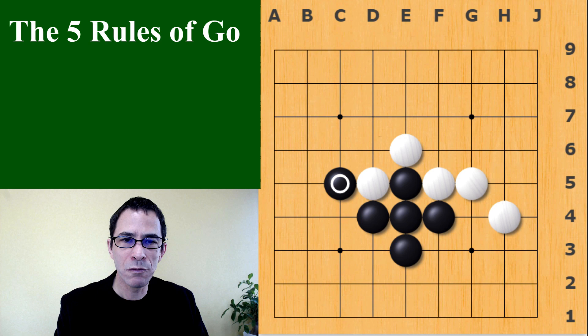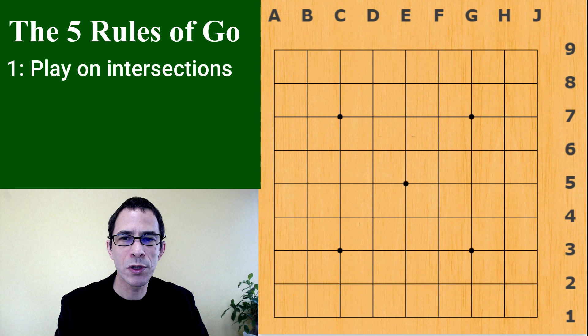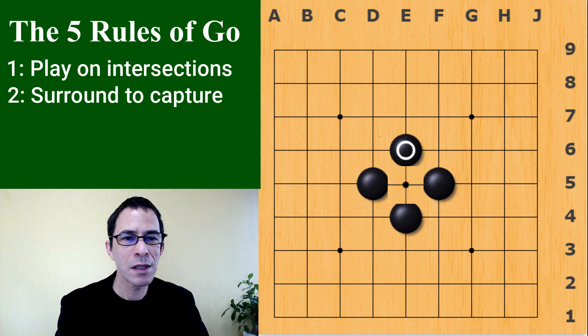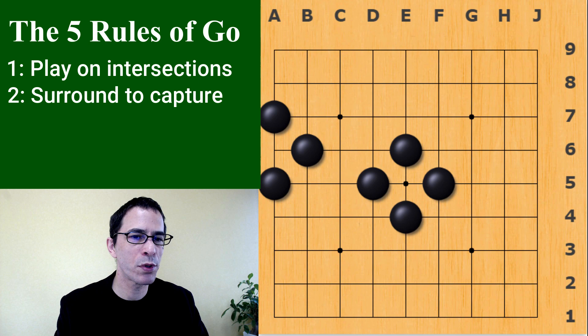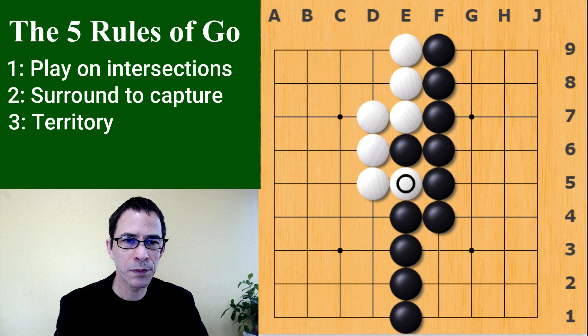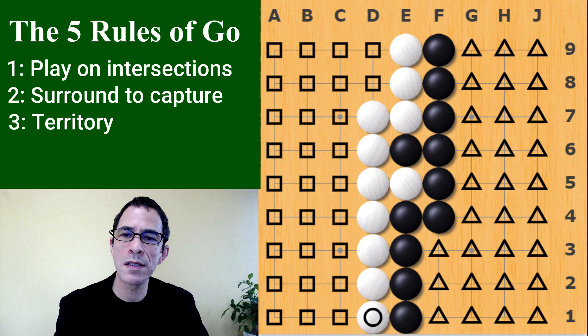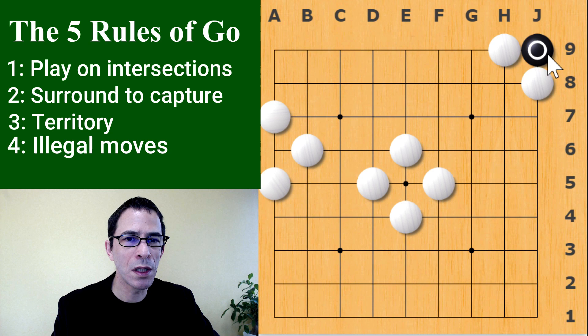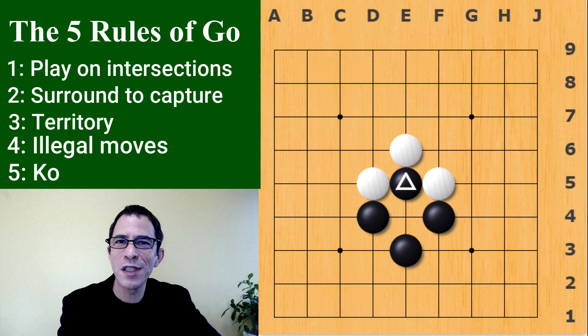So those were the five rules of Go. To recap: rule one, you can play any point on the board. Rule two, you can capture your opponent's pieces by surrounding them. Rule three, you count territory as open spaces you have surrounded. Rule four, there are illegal moves where your stone would be immediately captured. And finally, rule five, the Ko rule.